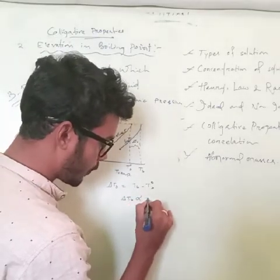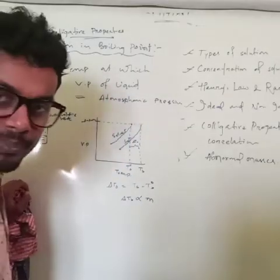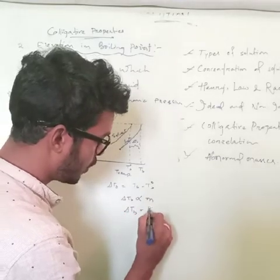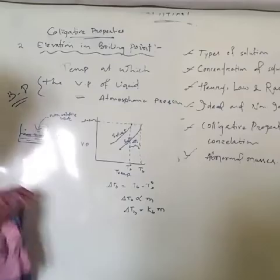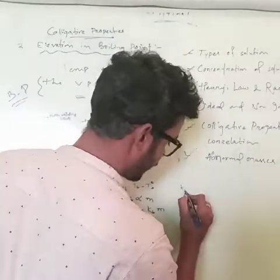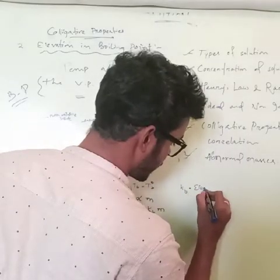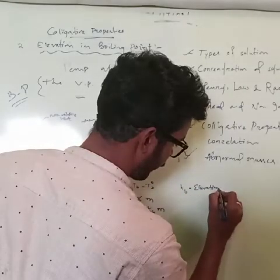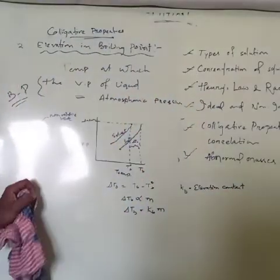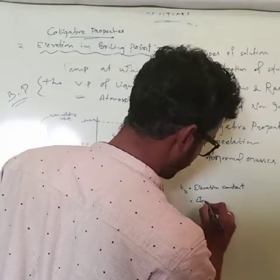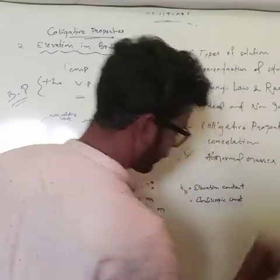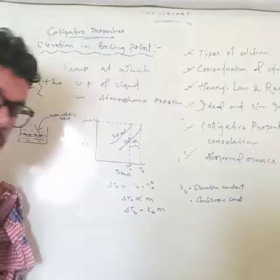So ΔTb is directly proportional to molality, or ΔTb equals Kb into molality. Kb is the elevation constant, also called the proportionality constant or ebullioscopic constant. What will be the unit of Kb?